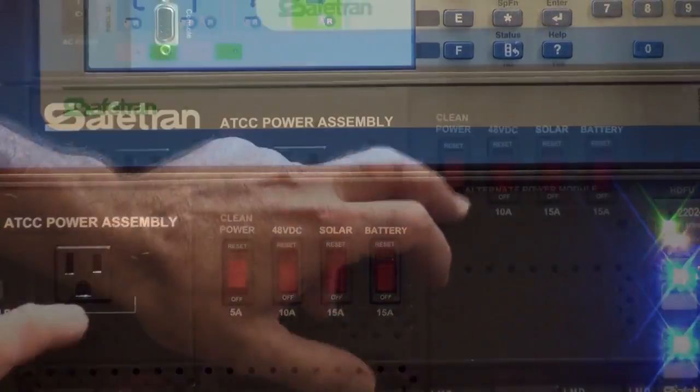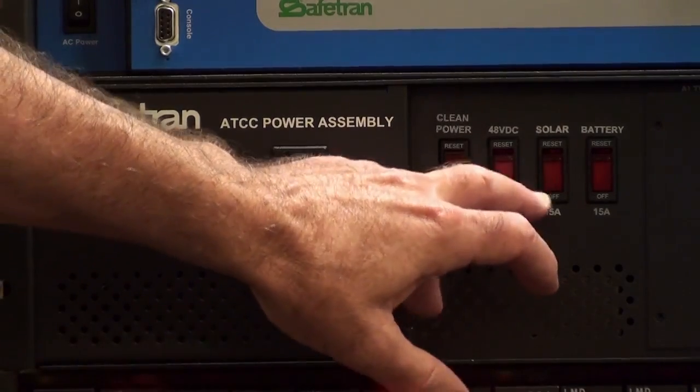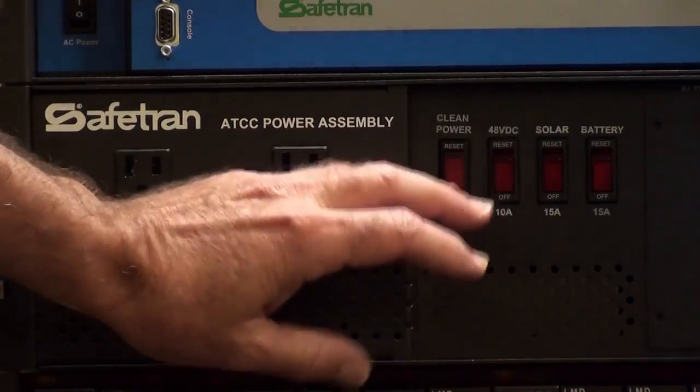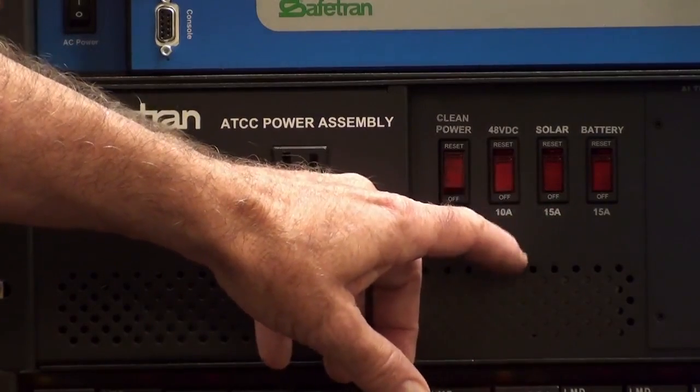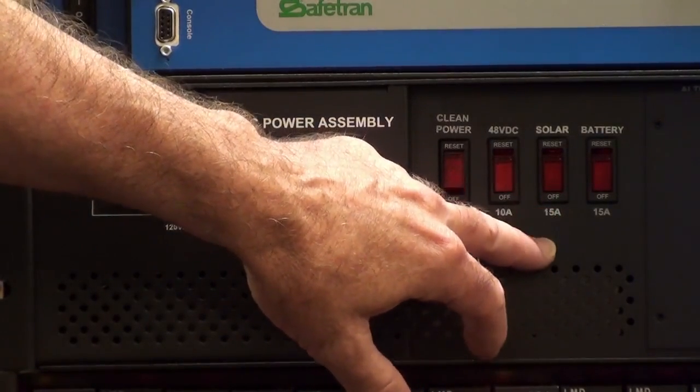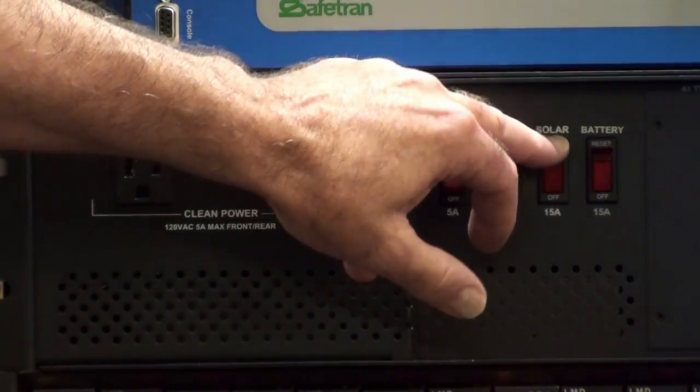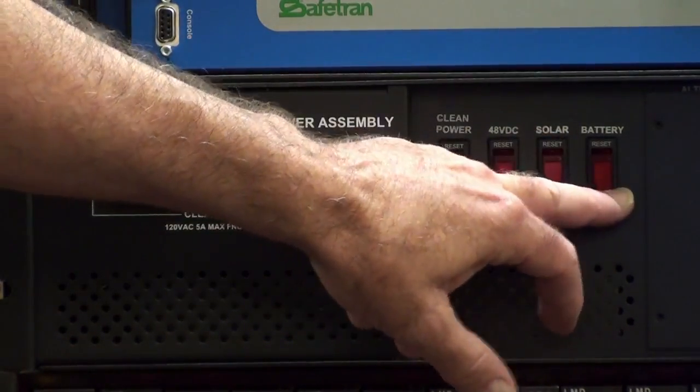The red circuit breaker switches are used to switch and protect various power subsystems within the assembly, such as the clean power switch that controls the two clean power outlets on the left side of the front panel and three outlets on the back panel. There is a high-power 48-volt DC switch that controls the high-power supply if installed. Switches are also provided to control the optional solar panel inputs and battery stack.